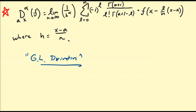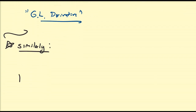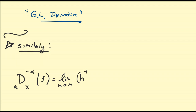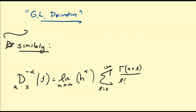Similarly, we derived another form that considers negative values of alpha. We saw that the fractional derivative with terminal points a and x of negative alpha of f is equal to the limit as n goes to infinity of h to the power alpha — so it's almost like the reciprocal — of the sum from l equals zero to infinity of gamma(alpha plus l) divided by l factorial times gamma(alpha) times f of x minus l over n times x minus a. This allows us to consider the fractional derivative for negative orders.